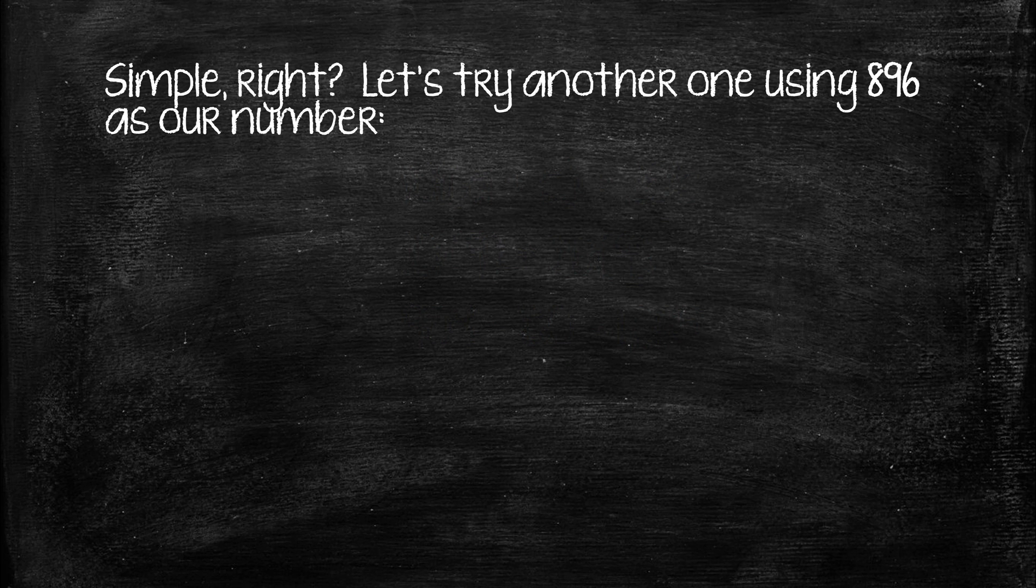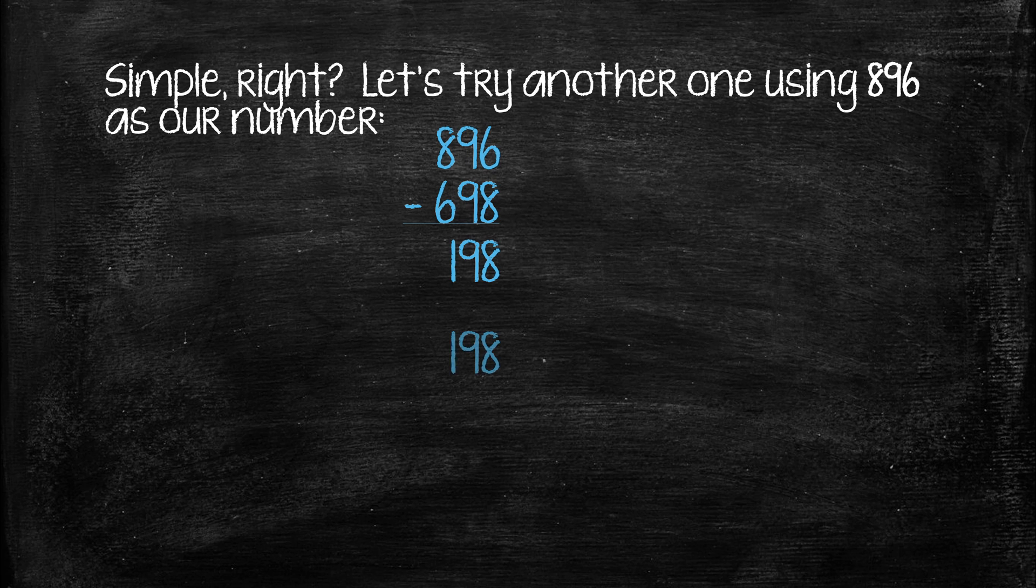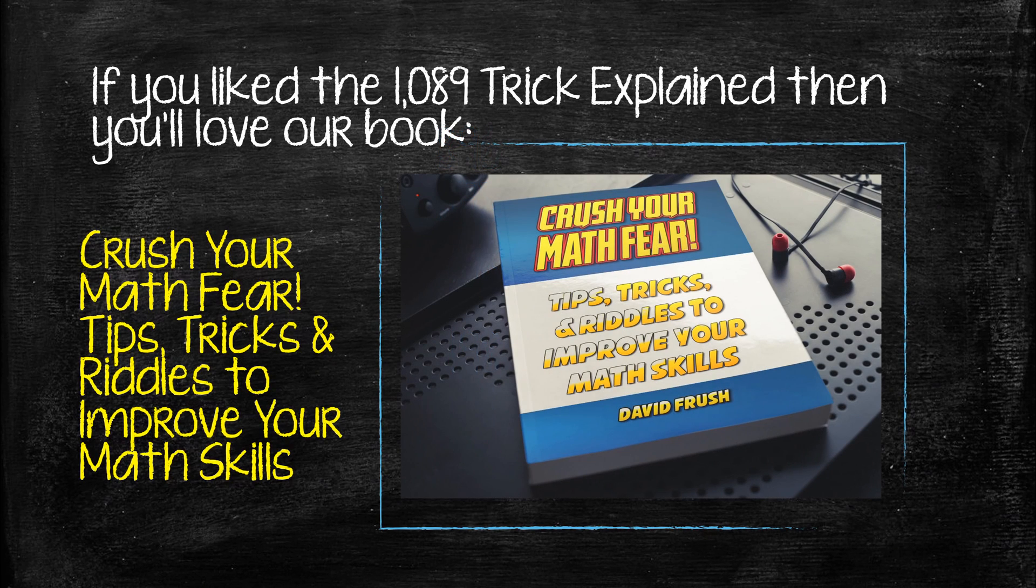Pretty simple, right? So let's try another one using 896 as our number. We take the reverse reciprocal of 896, which is 698. We subtract that, we get 198. Now we add the reciprocal of the answer, 891, and we get 1089. And that's our trick.